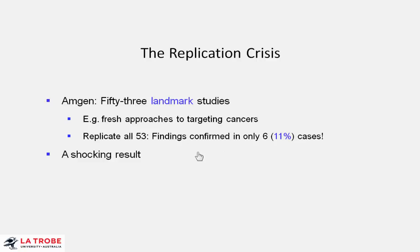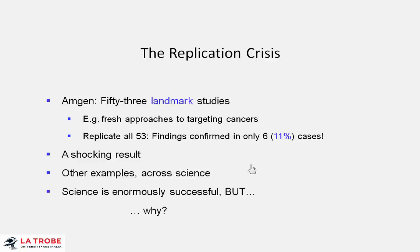Alas, the findings were basically only confirmed in six of the 53 cases. And there have been some other examples in psychology and other disciplines across science. Now, in general, science has been and is enormously successful. But these are troubling findings.